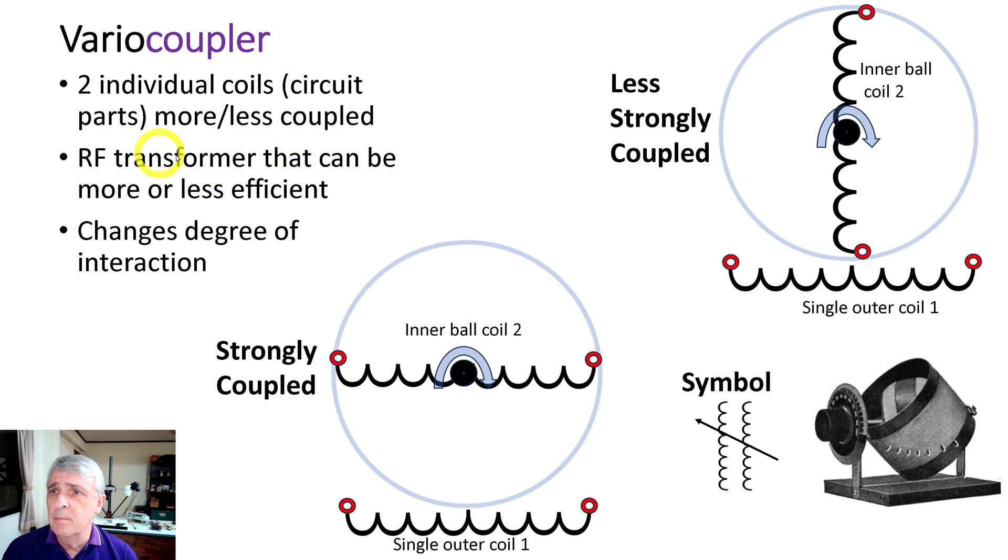The degree of rotation changes the degree of interaction. This is the symbol down here. And as you can see, this is a little different. It's got a lot of taps in it, that's because of the way it's used. And you'll also notice that the ball kind of dips into this. It's not just rotating at a 90 degree angle to this, it's kind of dipping in and out and it's also changing the orientation.